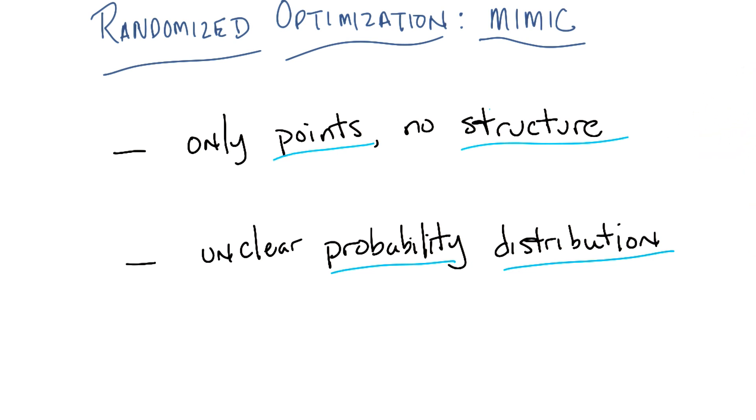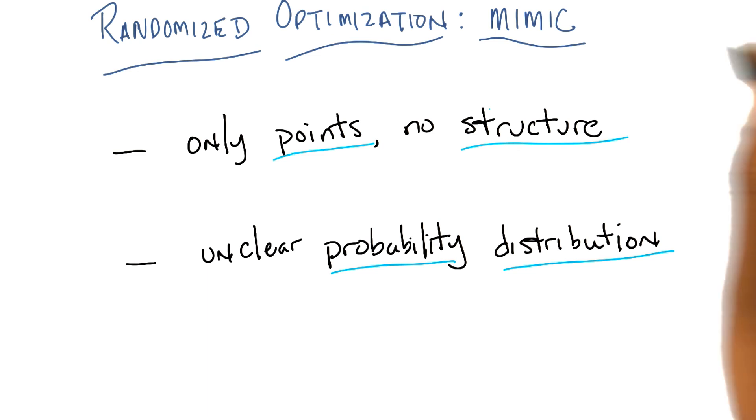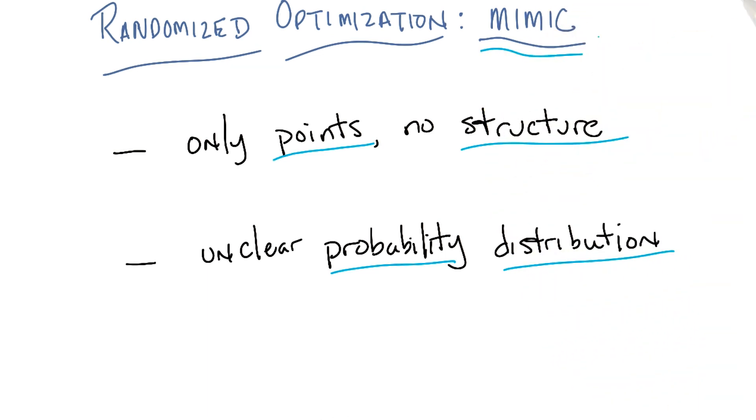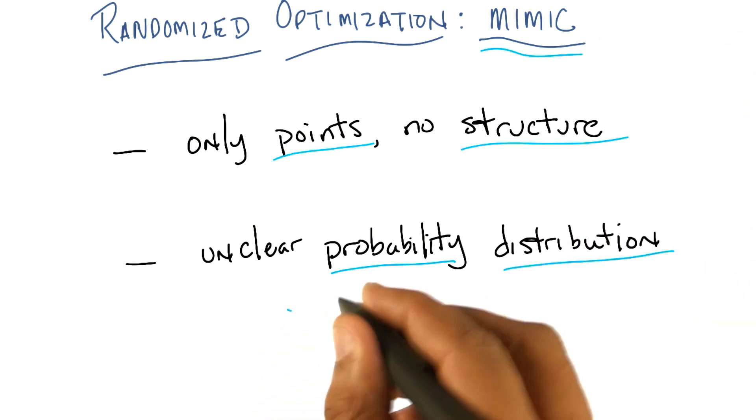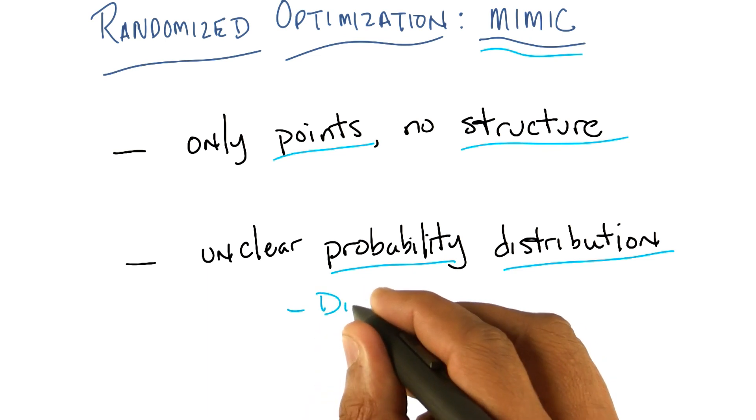So, in particular, the paper that I'm talking about introduced an algorithm called MIMIC, which actually stands for something. Though I forget what. And it really had a very simple structure to it. The basic idea was to directly model a probability distribution. Probability distribution of what? Well, I'll tell you.